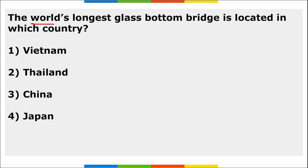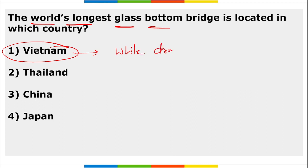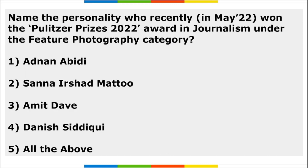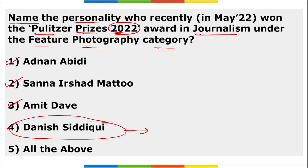The world's longest glass-bottom bridge is located in Vietnam. It is known as White Dragon, also called the Bach Long pedestrian bridge. The 2022 Pulitzer Prize in journalism under the feature photography category was awarded to four Indians: Adnan Abidi, Sanna Irshad Mattoo, Amit Dave, and Danish Siddiqui — the journalist who was killed in Afghanistan.